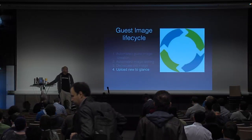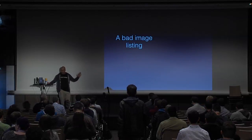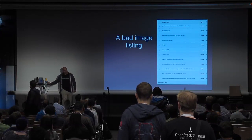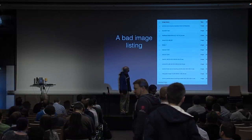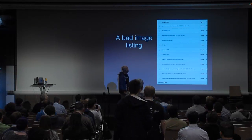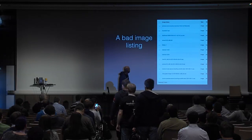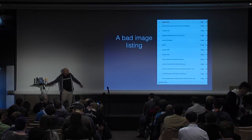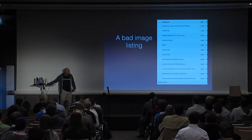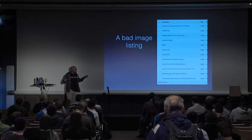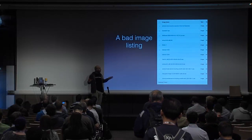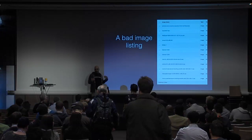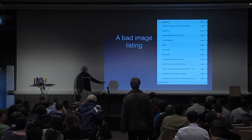Let me go through some examples of what not to do. Here's an example of a bad image listing. If you're a user looking at this list, what are you supposed to pick? They're all active, they're all public, they've got people's names on them. You see seemingly different versions of the same thing — there's a 'precise' and a '1204' and a 'trusty' and a '1404'. I'm certain some ops guy can tell you exactly what each one is, when it was put up and what it's for. But we're not the intended audience — this is for the consumption of our users, not ourselves.